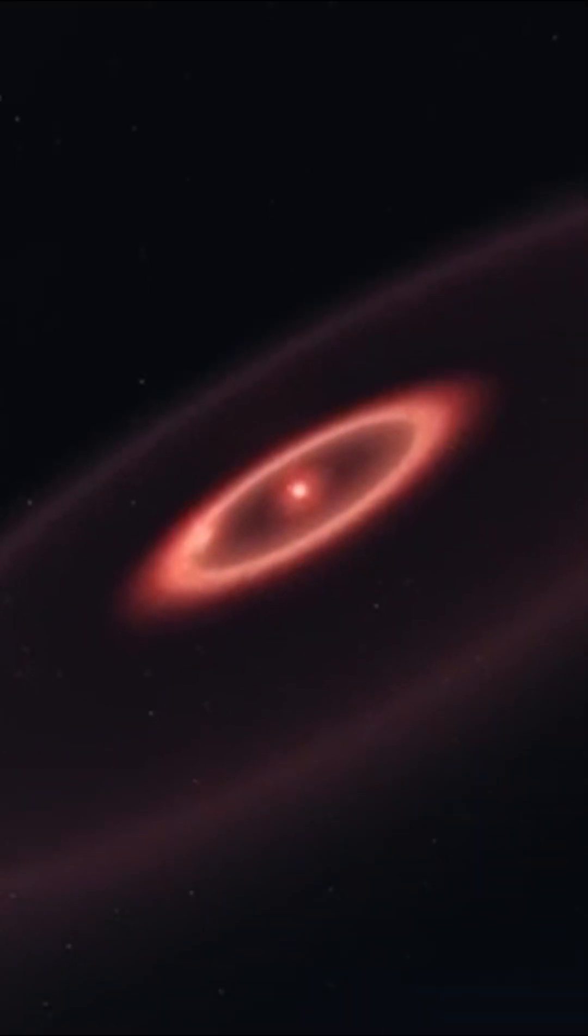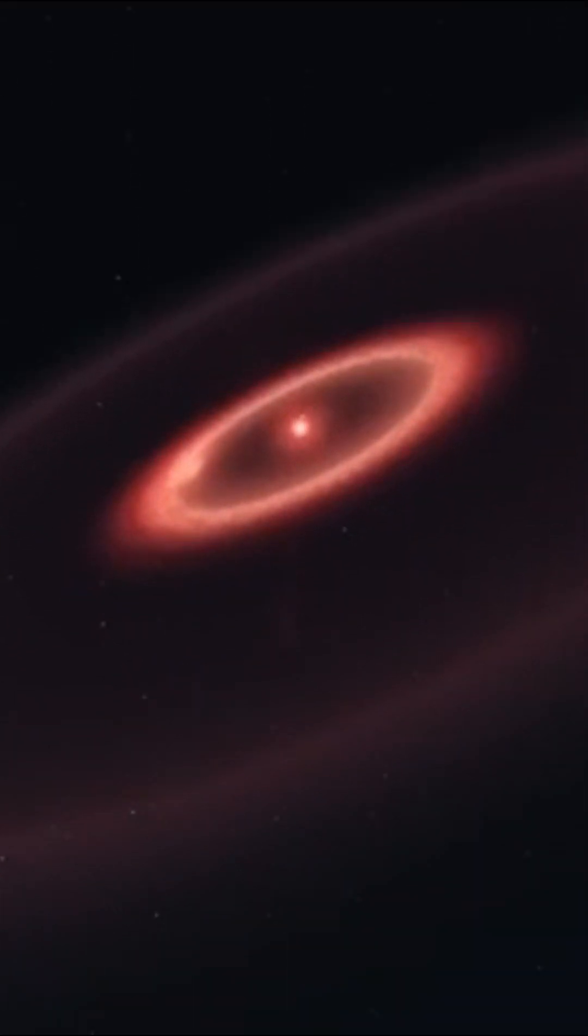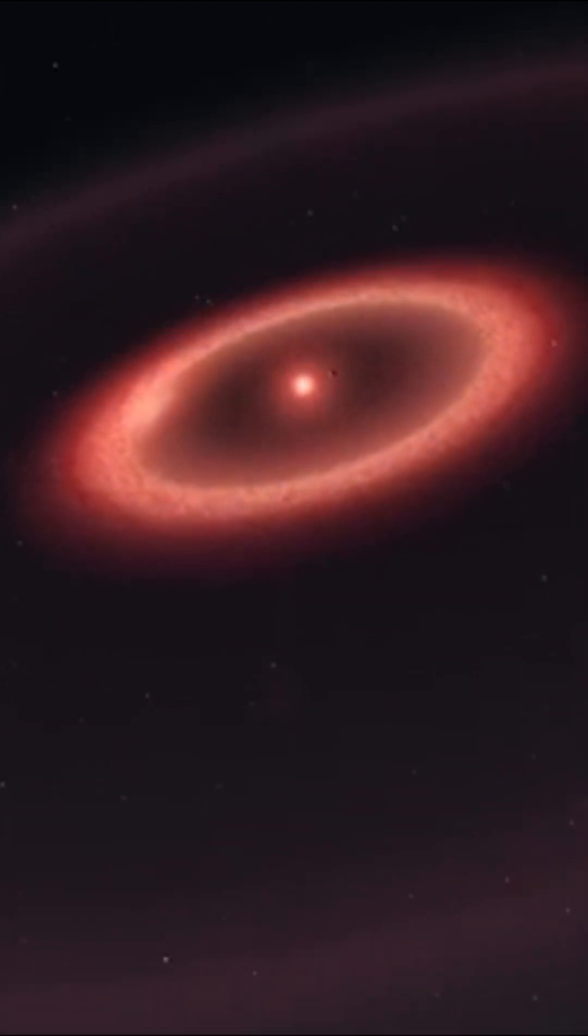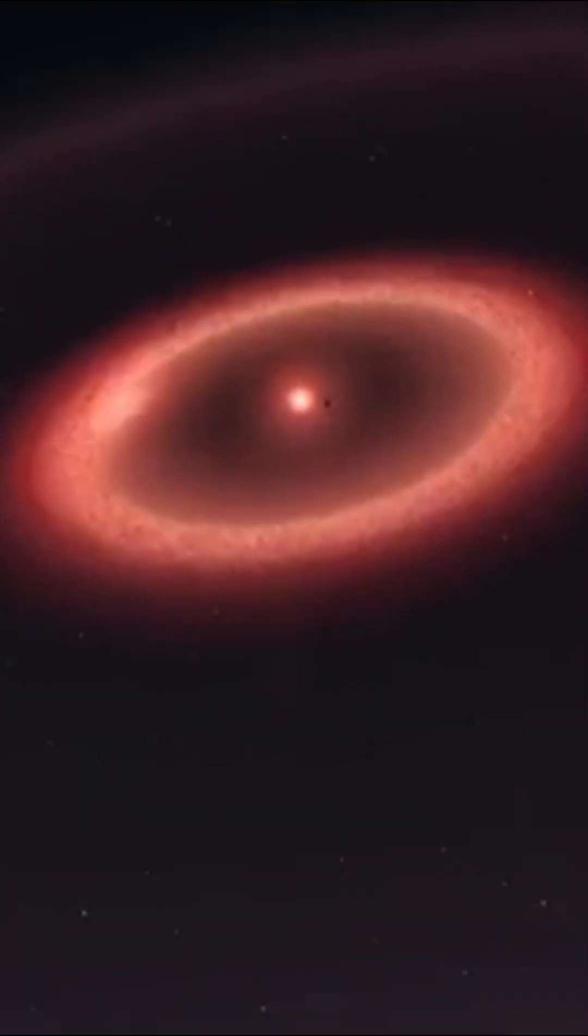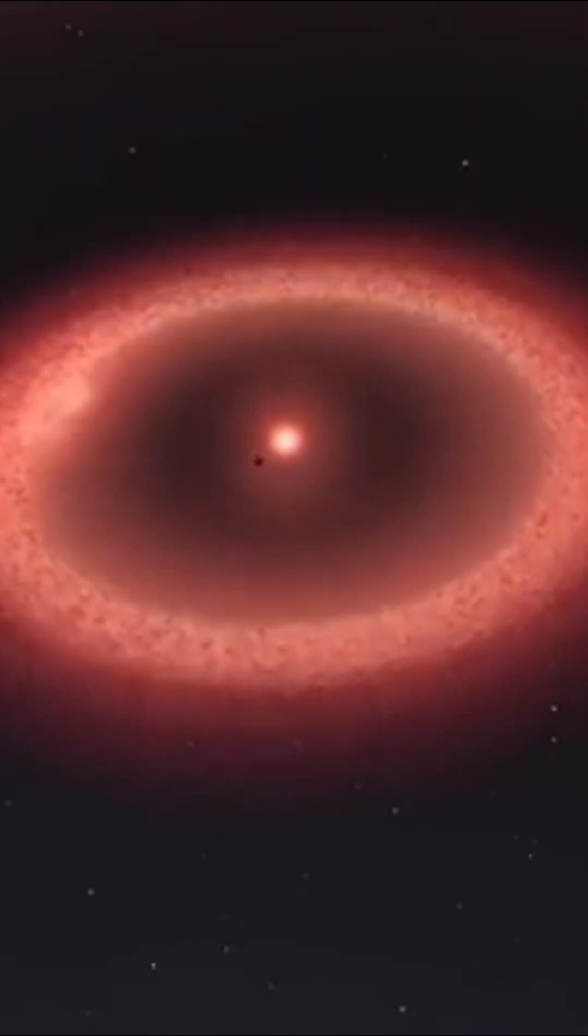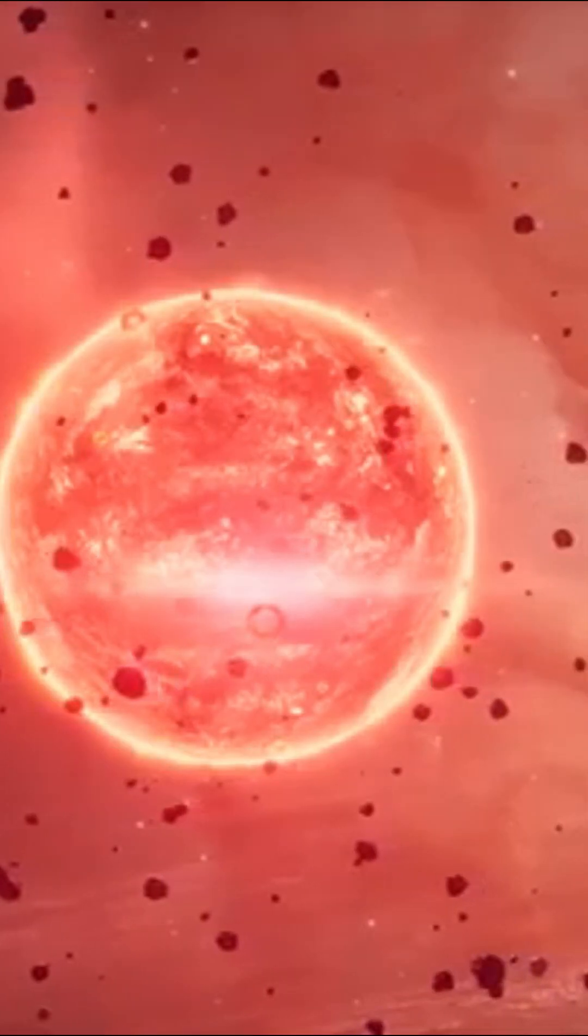The planetary system closest to us and widely studied by scientists is organized around a red dwarf. This hasn't stopped researchers from wondering whether life could be found in this planetary system. The system in question is Proxima Centauri.